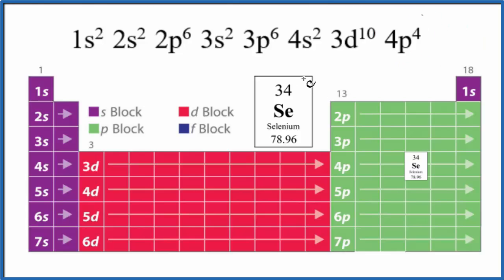4p⁴ is our last term here. We've used all the electrons. This is the electron configuration for Se. Sometimes you'll see this written with the 4s² after the 3d¹⁰. That's okay too. Either way is correct.